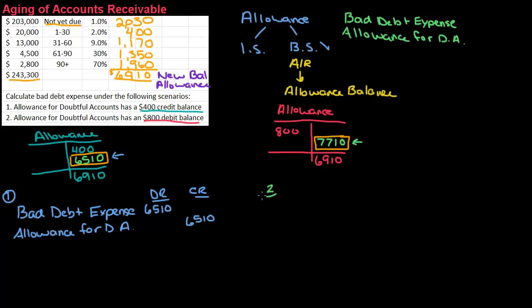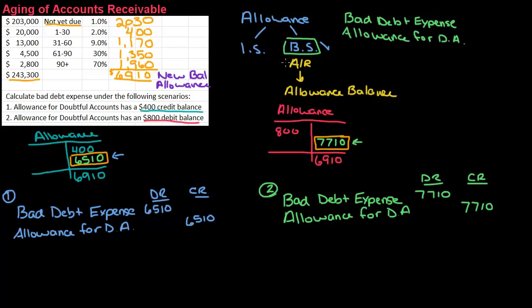So if I do the journal entry for number two, the accounts are going to be exactly the same. The only thing that's going to be different is the amount. So bad debt expense and allowance for doubtful accounts. Set up my debit and my credit. So my debit is going to be $7,710 and my allowance is also going to be $7,710. And that's it. Just make sure that you remember that this is a balance sheet method. This is a balance sheet method. So you're using accounts receivable to calculate allowance for doubtful accounts.